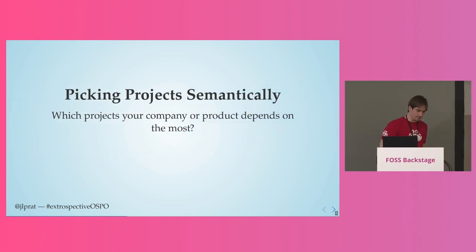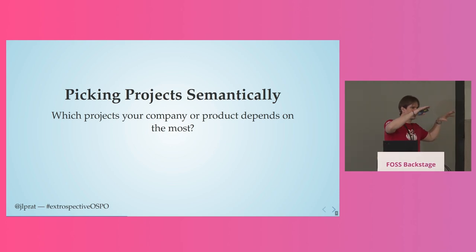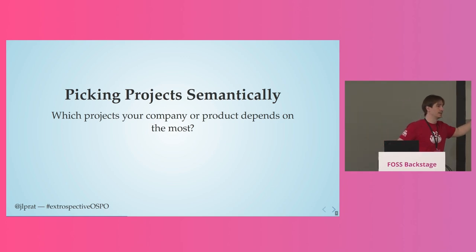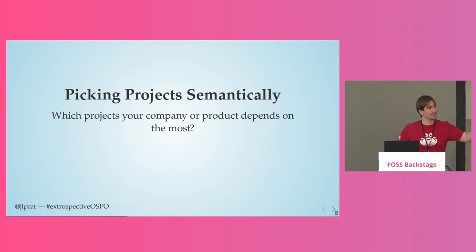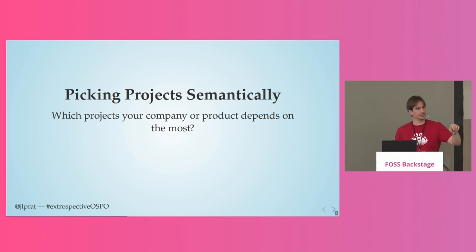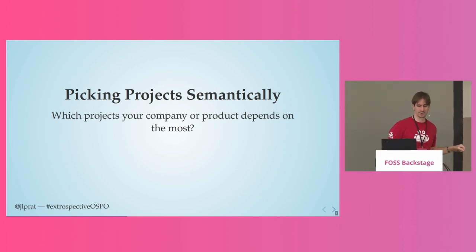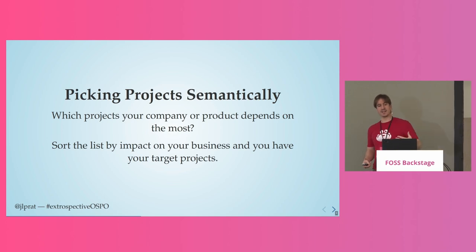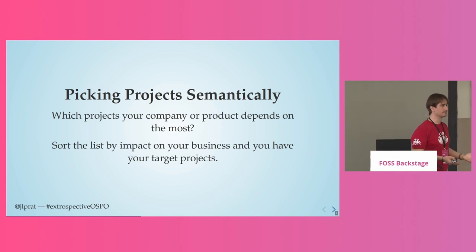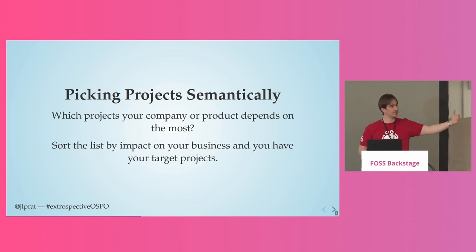When we pick projects semantically, we go through all the projects we use — production systems, CI systems, monitoring — everything that supports our business. We look at all the dependencies and identify the ones that would hurt us the most if they disappeared. Those are the ones we need to pick: the ones that, if they vanished, we'd have serious problems. We sort the list by impact on our business — those become our target projects, and we prioritize and staff them accordingly.